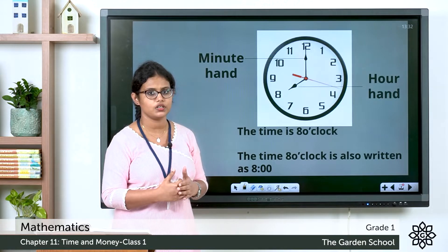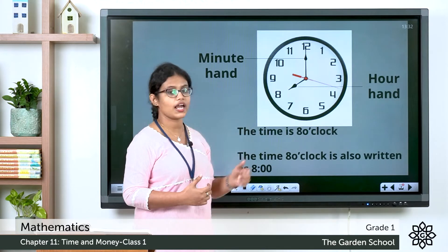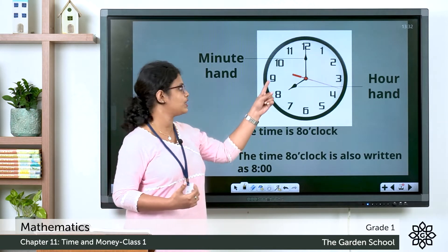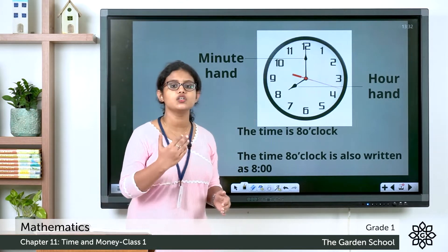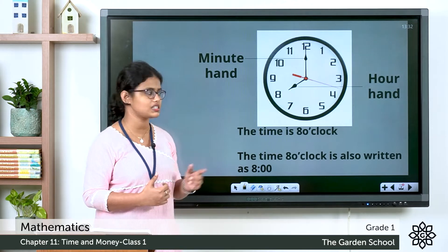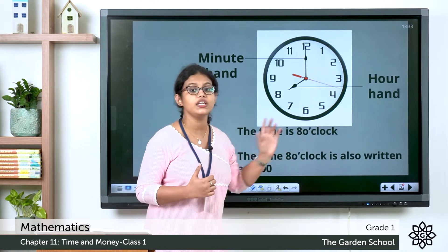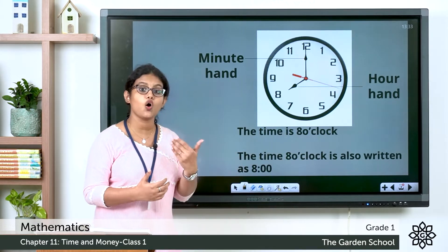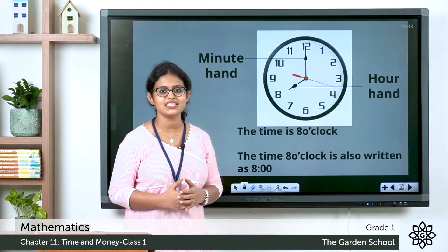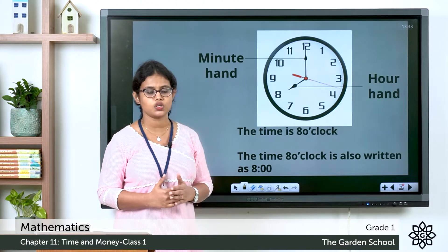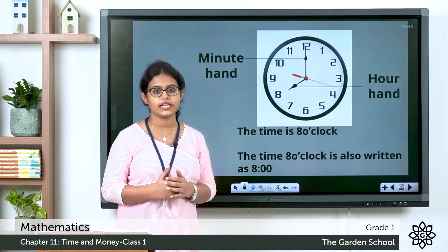Let me give you an example. Can you say what time is it? You can see the hour hand — it points to number 8. And where is the minute hand? The minute hand is exactly at 12. So what time is it? It is 8 o'clock. You can write it as '8 o'clock' or as '8:00'.